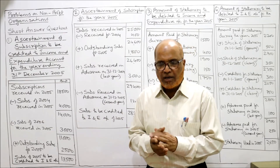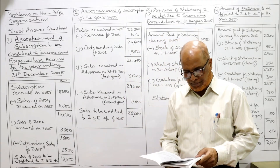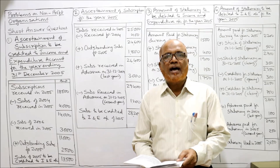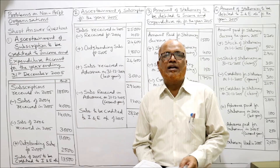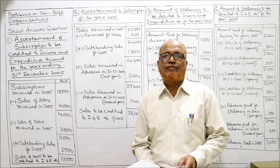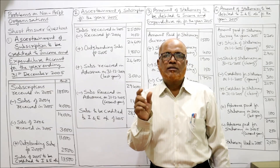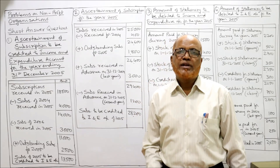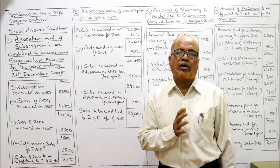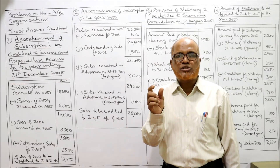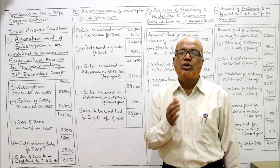Now we'll start the problems on nonprofit organizations. First we'll solve a few short problems, then we'll go to the main problems. First short problem: ascertain the amount of subscription to be credited to the income and expenditure account for the year ending 31st December 2005. Subscription — as I explained in the theory video — is the main source of income of a non-trading organization.